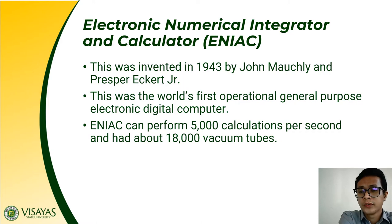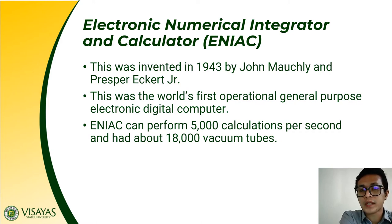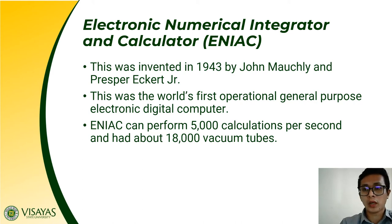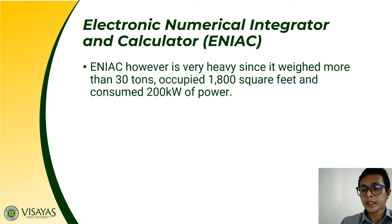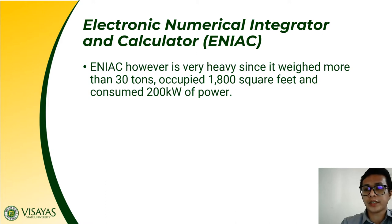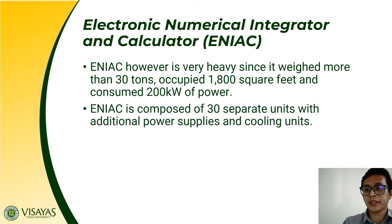This is how the first generation computer looks like — consisting of thousands of vacuum tubes. As we have known, vacuum tubes dissipate more heat as they operate — imagine having 18,000 of them. The temperature could be very high while this computer was in use. ENIAC was very heavy, weighing more than 30 tons, and occupied 180 square feet, consuming about 200 kilowatts of power.